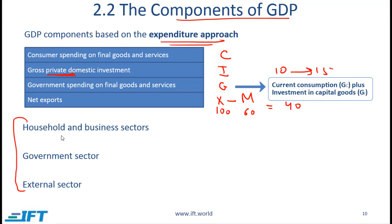The three major sectors we deal with are the household and business sectors — which can be thought of as the private sector — the government sector, and the external sector. Households earn income and from that income they either consume or save. The business sector gets money from the financial markets, either by borrowing or by issuing equity, and that money is used to make investments.